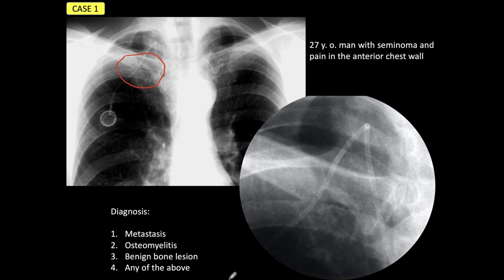Let's analyze the lesion. There is an obvious lytic lesion that is eroding the lower part of the proximal right clavicle. But there is an important finding here: the lesion has a sclerotic border that you can see very nicely. A lesion with a sclerotic border is, by definition, benign. So if it is a benign lesion, we can exclude metastasis and we can exclude osteomyelitis.